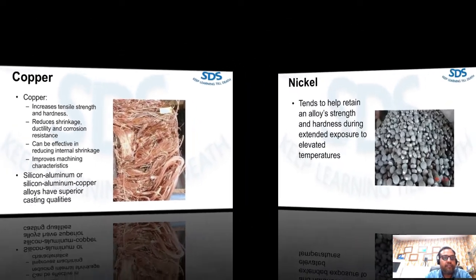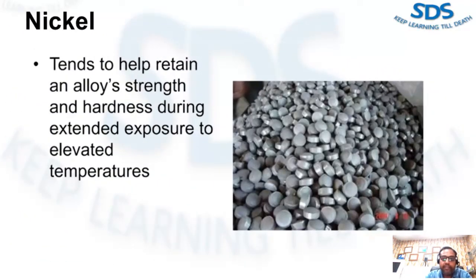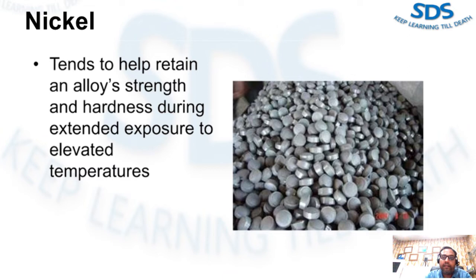Nickel in moderate quantities tends to help an alloy retain its strength and hardness during extended exposure to elevated temperatures. The melting point of nickel is 2,646°F, which is greater than both silicon and copper melting points. The solubility of nickel in aluminum is 5.7% at 1,184°F.